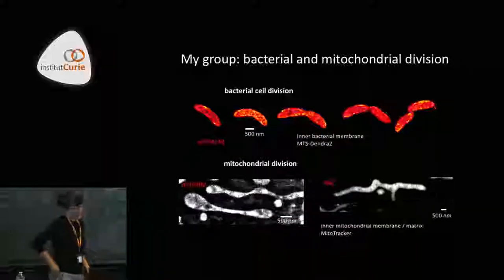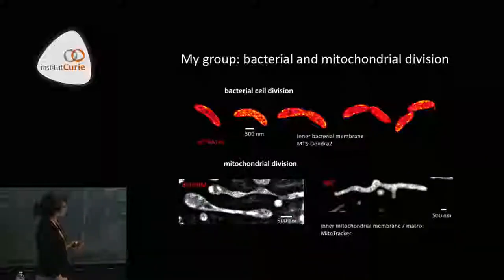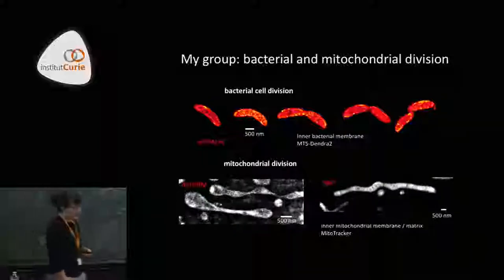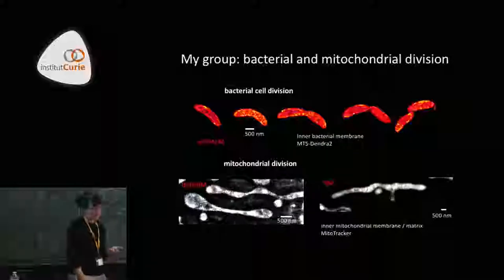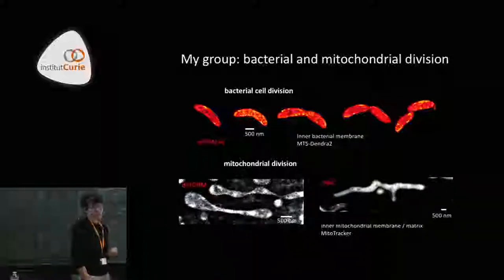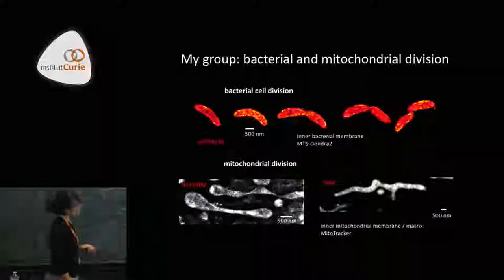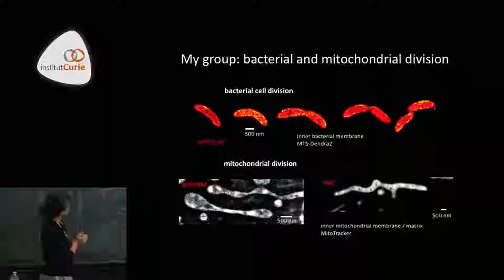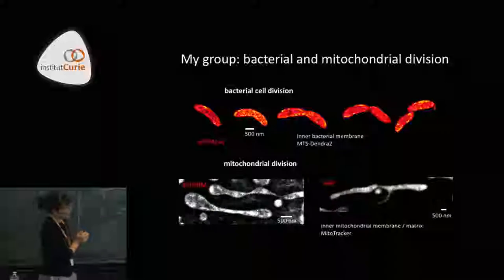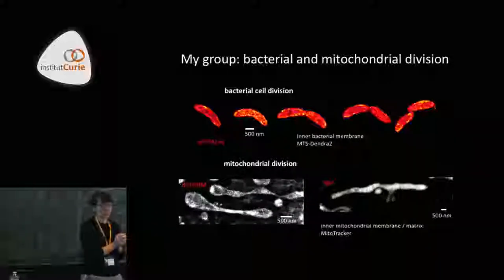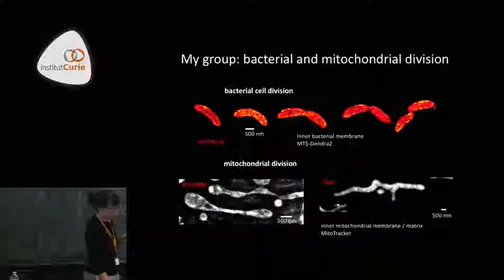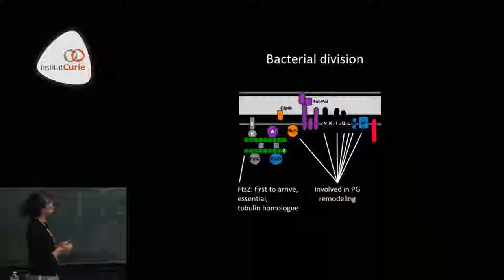In my group, we've been using localization microscopy and structured illumination microscopy to study bacterial and mitochondrial division. One reason this system is so enticing for super resolution microscopy is that bacteria are about the right size — around 500 nanometers, right at the diffraction limit for visible light. As you go through the shape transitions associated with division, you eventually hit a singularity when the cells actually divide. If you want to study this process, it's a huge help to have super resolution.